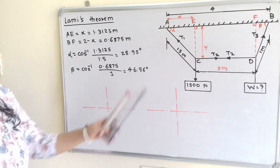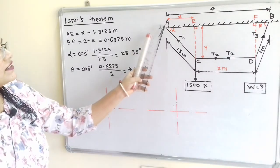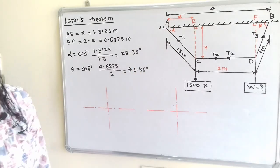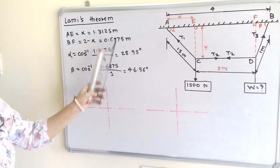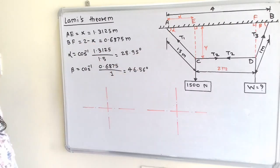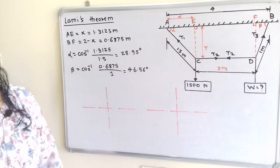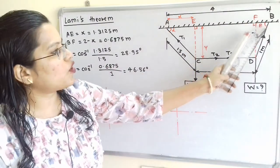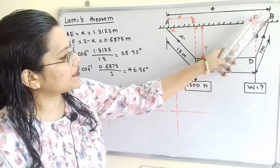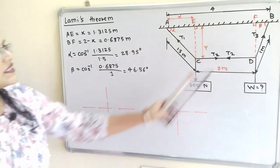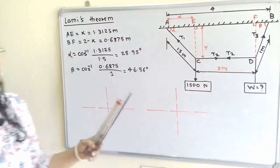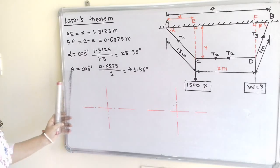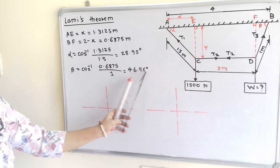Now we calculate angle alpha: cos(alpha) = AE / AC = X / 1.5 = 1.3125 / 1.5, giving alpha = 28.95°. Similarly, cos(beta) = BF / BD = (2 − X) / 1 = 0.6875, giving beta = 46.56°.